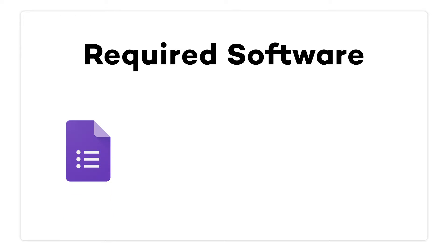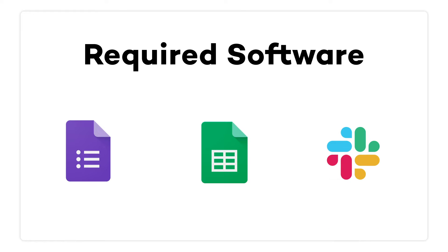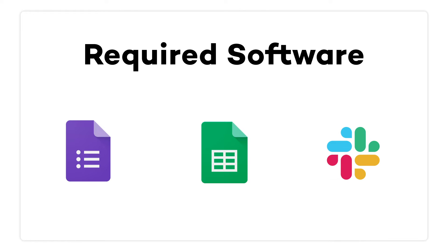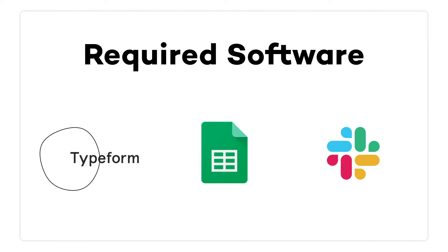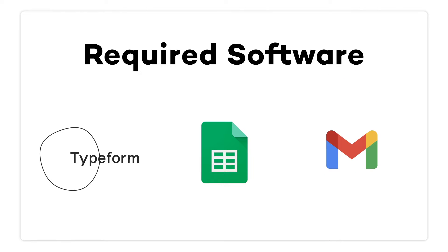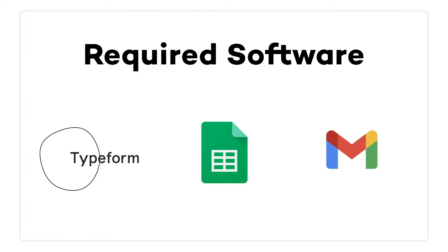For this tutorial, we'll be using Google Forms, Google Sheets, and Slack. However, you can use just about any software you'd like. You could collect your answers with Typeform instead of Google Forms, or send the finished ad-lib in an email instead of Slack. Whichever app you use, it will all work basically the same way, so the software is really up to you.